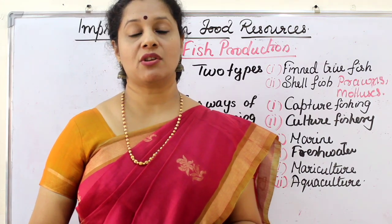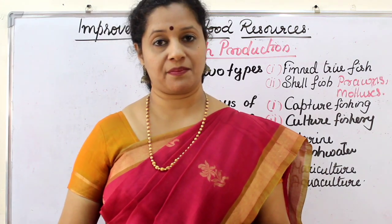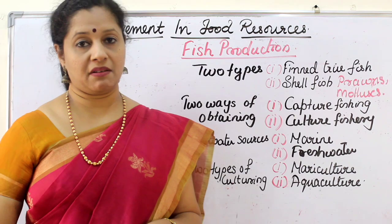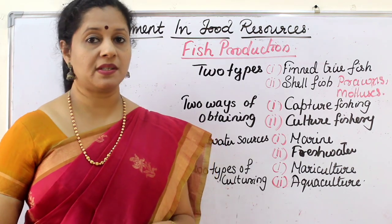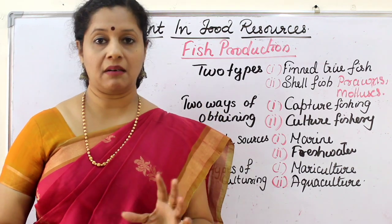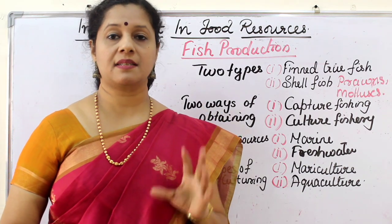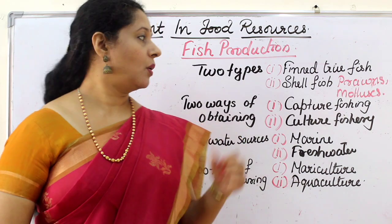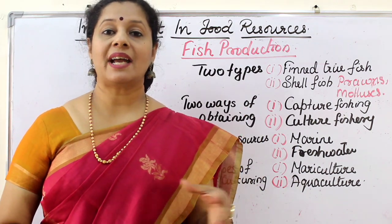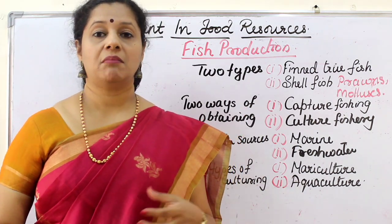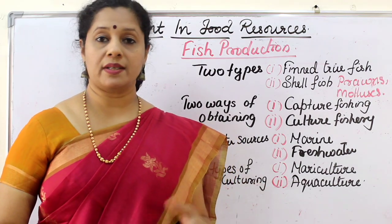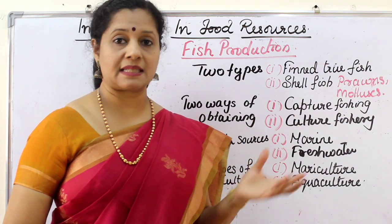We have different ways of culturing fish. Mainly two types of fish are being farmed or used. One is finned true fish — the typical fish species. The second category is shellfish. They are not actually fish but they are also used as seafood, like prawns, oysters, mollusks, etc.